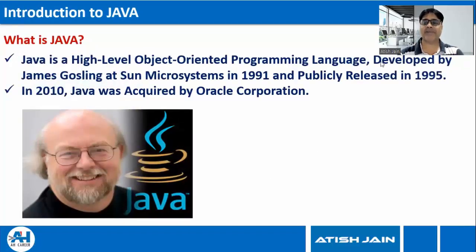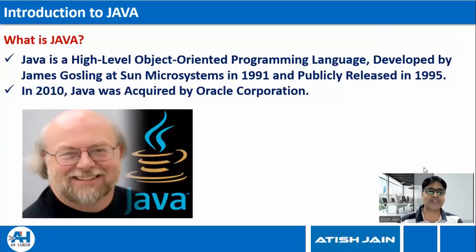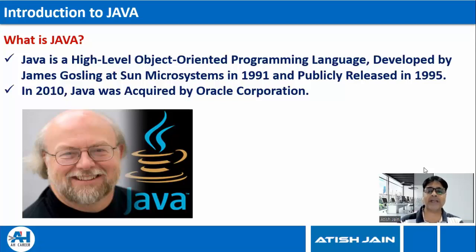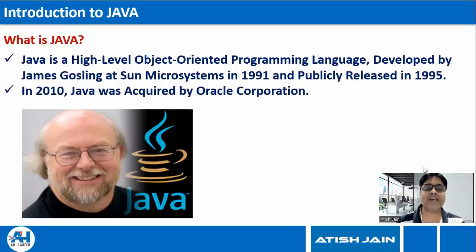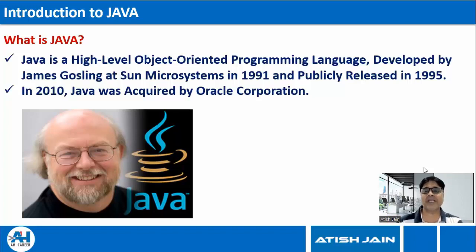What do you mean by Java? Java is a programming language — it is a high-level, object-oriented programming language, developed by James Gosling at Sun Microsystems in 1991, and publicly released in 1995. In 2010, Sun Microsystems was acquired by Oracle Corporation. When we say Java is a high-level programming language, it means you can write programs in Java using simple natural language like English, without really bothering about the underlying architecture of your machine. That's what we call high-level.